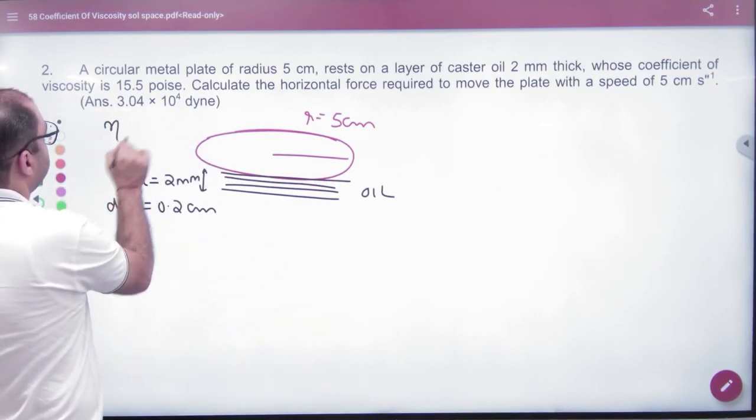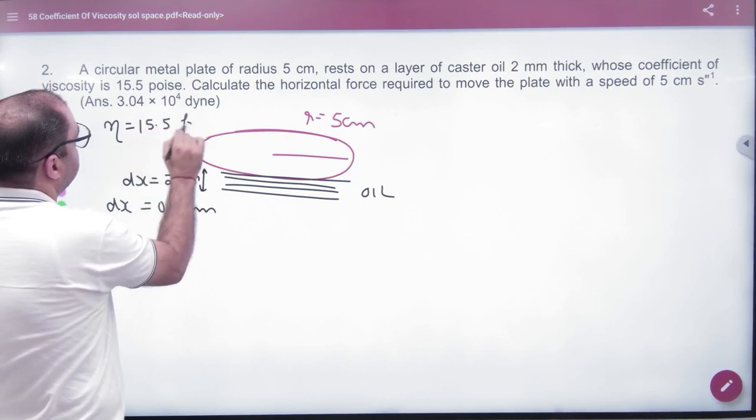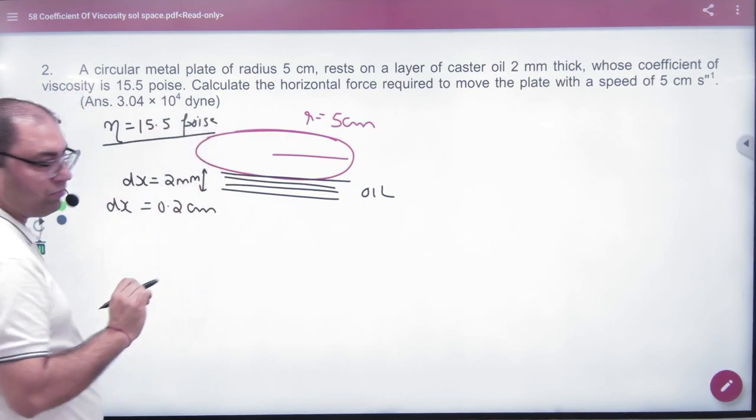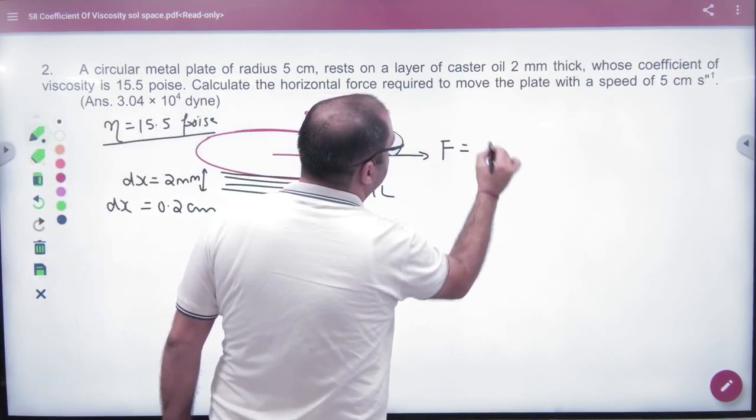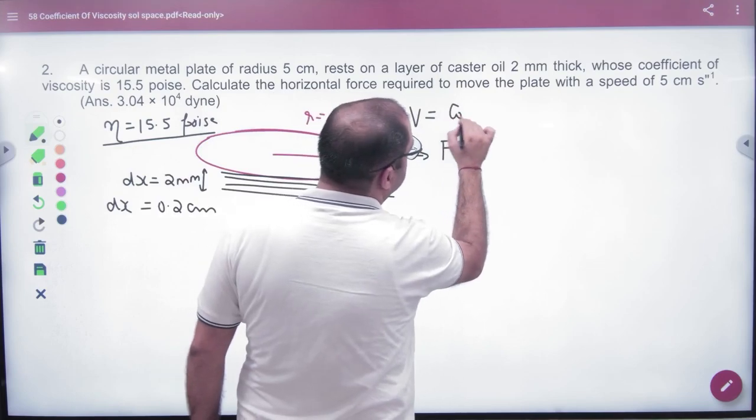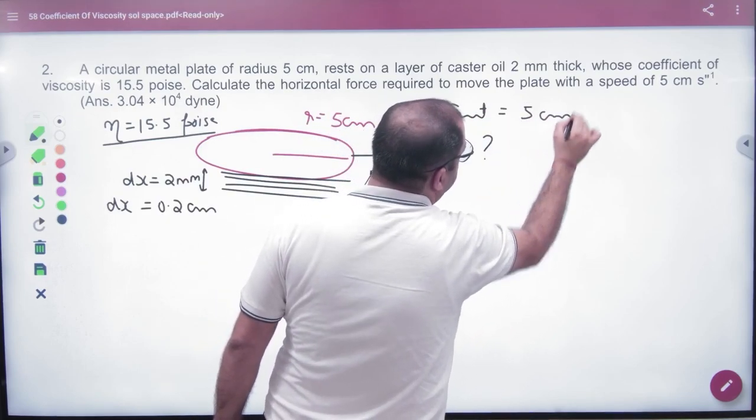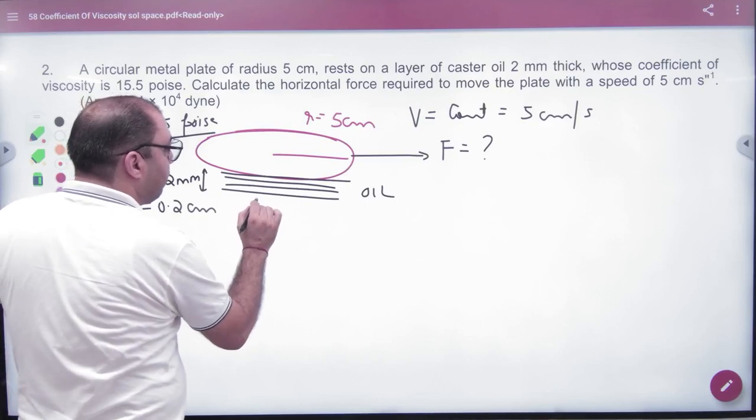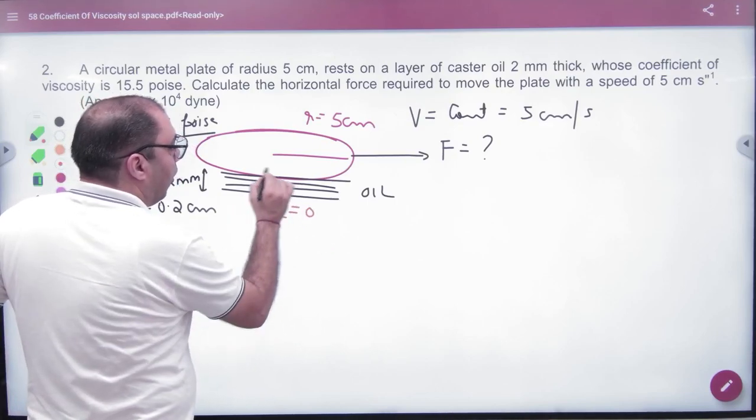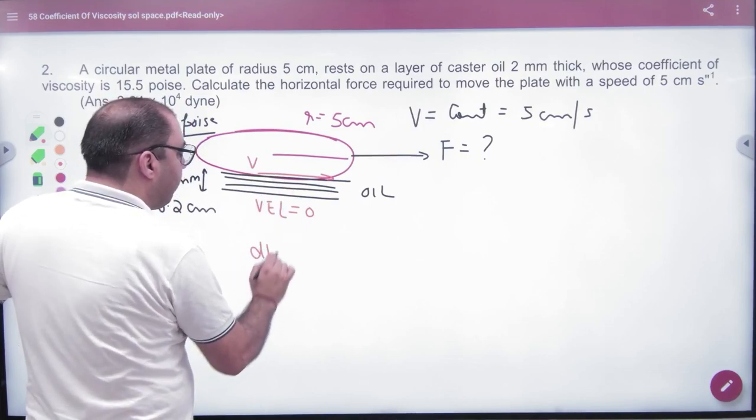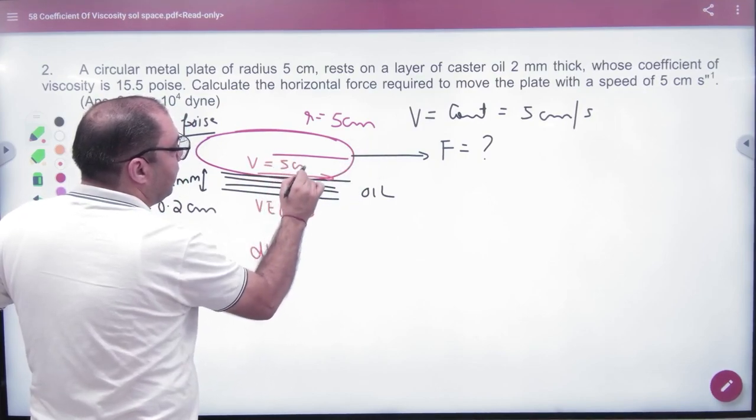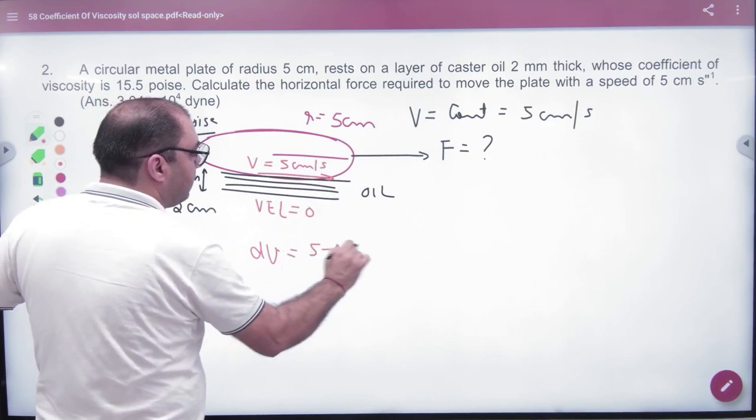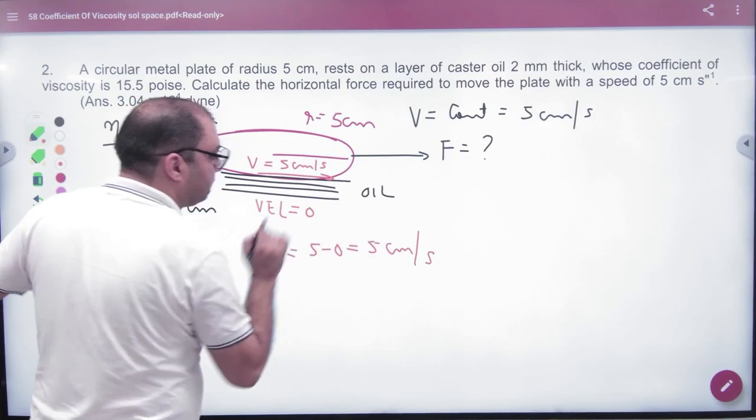Coefficient of viscosity 15.5 poise. Poise is CGS units. You have to tell how much force to move with a constant velocity of 5 cm per second. Now when we move the plate, the last time I discussed, when we move the plate, then what will the velocity be? Lower point 0, and what will the velocity be? V. What will V value be? Already given, 5 cm per second. So DV is 5 minus 0, which is 5 cm per second.